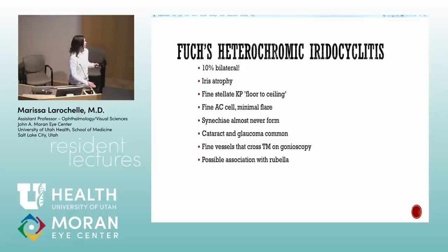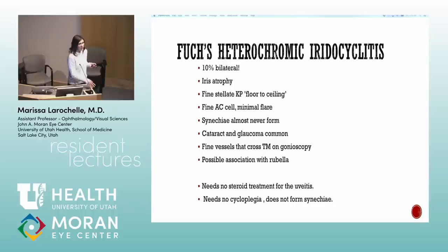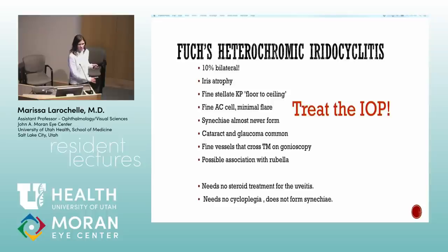In Fuchs uveitis, synechiae do not form, which is why you don't have to aggressively treat the anterior chamber inflammation. It's usually mild inflammation that's hard to treat with prednisolone, but this is the one exception where you can leave trace or one-plus cells. It doesn't cause CME or posterior synechiae. There is a possible association with rubella. Patients lose vision from glaucoma — no cycloplegia, no steroids to treat the IOP.